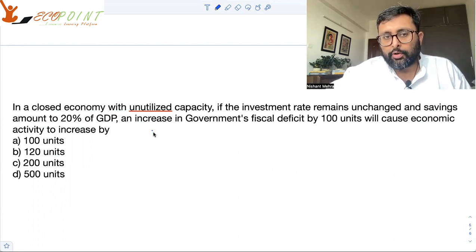So we have for the closed economy, we have the expression like this: y is equal to c plus i plus g. It's a simple Keynesian model.